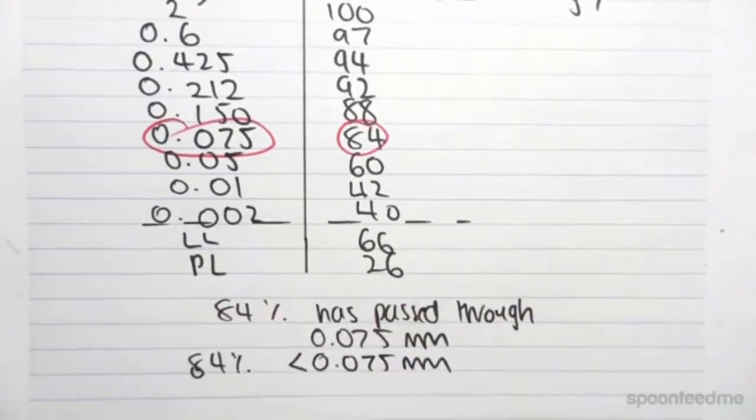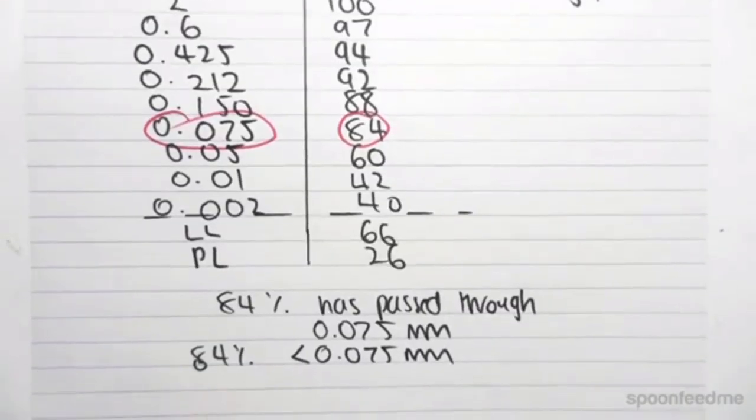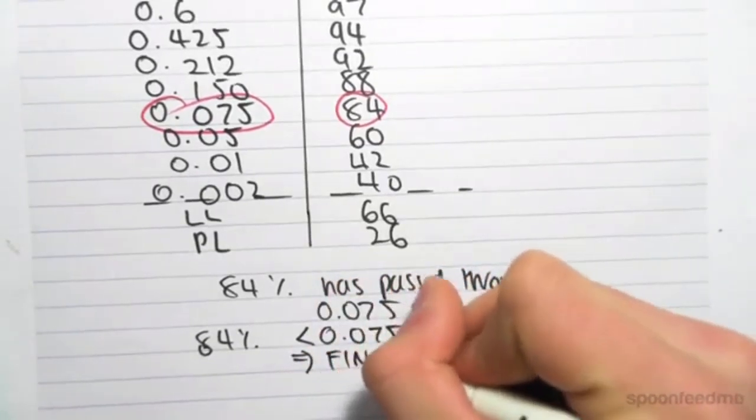And we knew that a fine soil is defined when more than 50%, so the majority is fine. And we can see that 84% is obviously the majority. So we're definitely dealing with a fine soil.